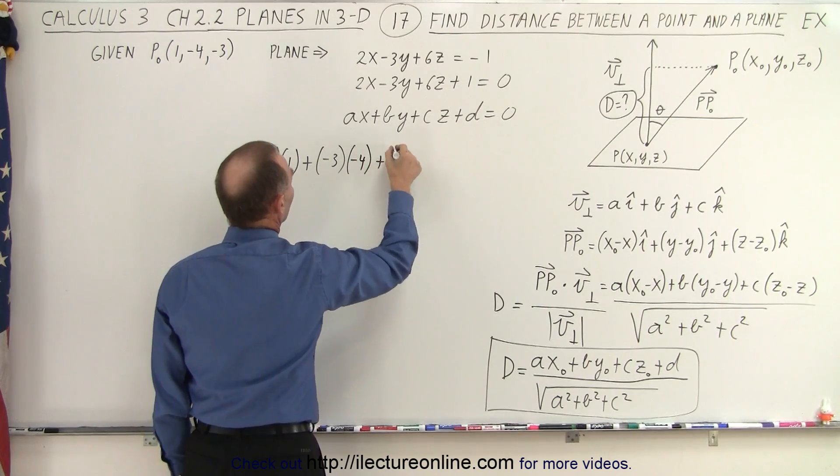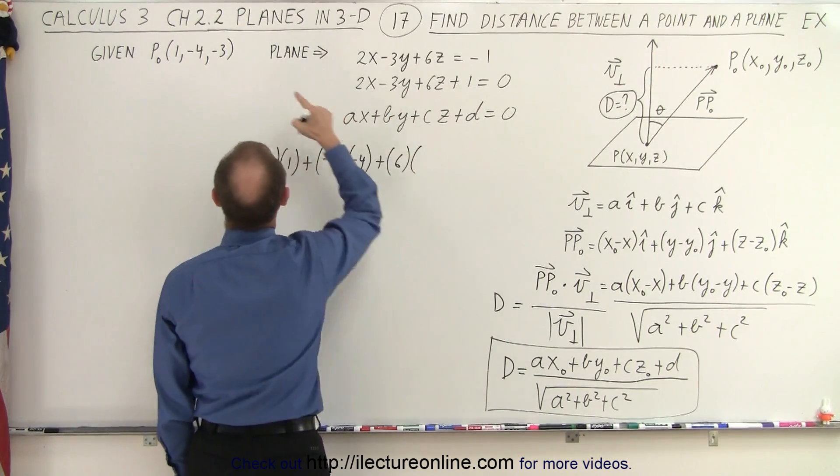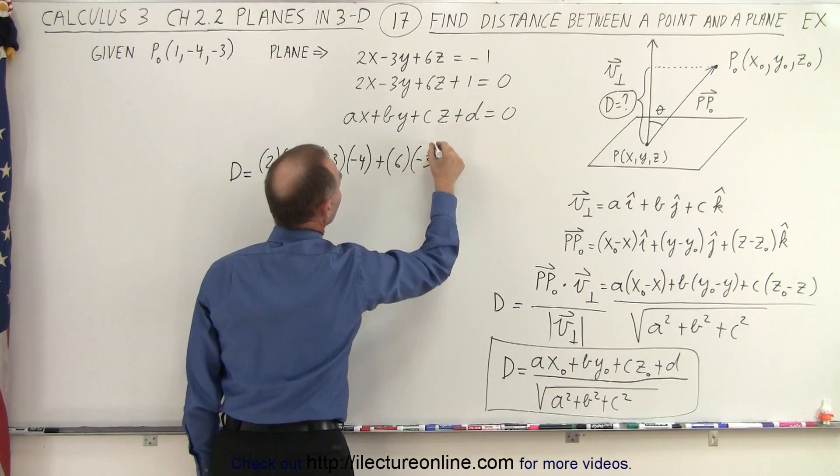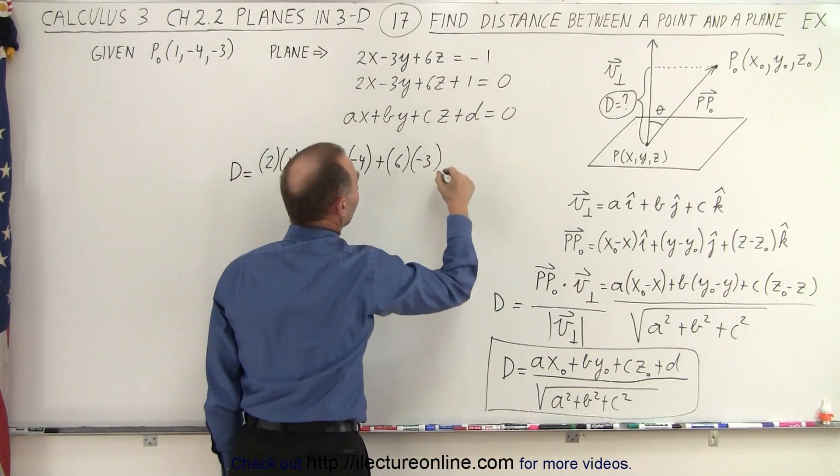plus c, which is 6, and z sub-naught, which is minus 3, and then we have to add plus d, and d is equal to 1.